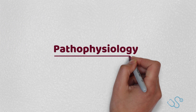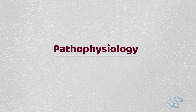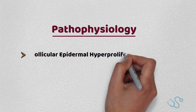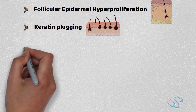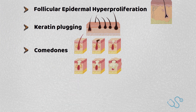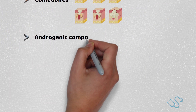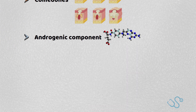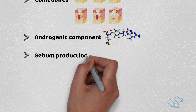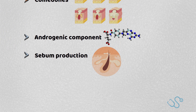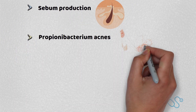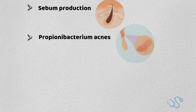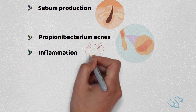Looking through a pathophysiological lens, there are multiple factors, but in essence we know there's follicular epidermal hyperproliferation causing keratin plugging. This is what classically causes comedones. There may also be an androgenic component, and sebaceous gland activity and therefore sebum production is classically affected by varying androgen levels. With these changes, there is traditionally colonisation with the anaerobic bacteria Propionibacterium acnes, and all of these issues cause localised inflammation of the pilocebaceous unit.